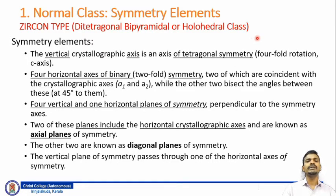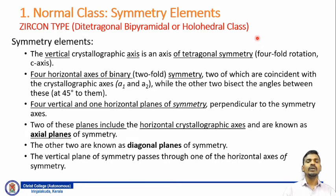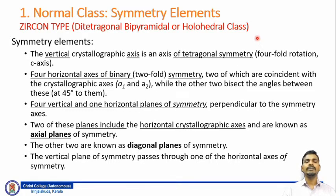The symmetry elements of the normal class of the Tetragonal system include one vertical axis of four-fold symmetry, which is a tetragonal symmetry with respect to the c-axis, and four horizontal axes of two-fold symmetry. Two of these horizontal axes coincide with the horizontal crystallographic axes a1 and a2, while the other two bisect the two crystallographic axes at an angle of 45 degrees between them. There are also five planes of symmetry — four vertical planes and one horizontal plane — all oriented perpendicular to their axes of symmetry. Two planes passing through the horizontal crystallographic axes are known as axial planes, and the other two at 45 degrees are known as diagonal planes. The crystal also possesses a center of symmetry.